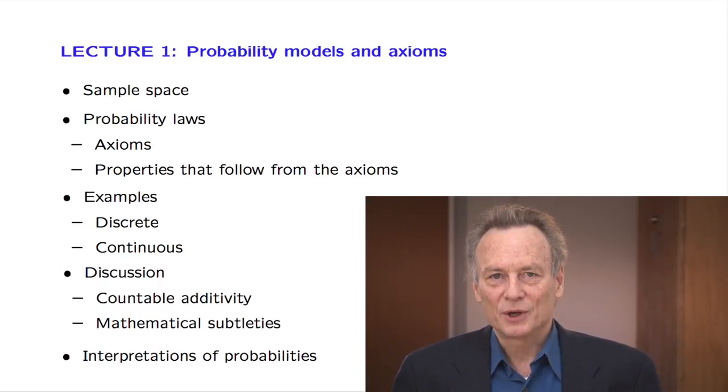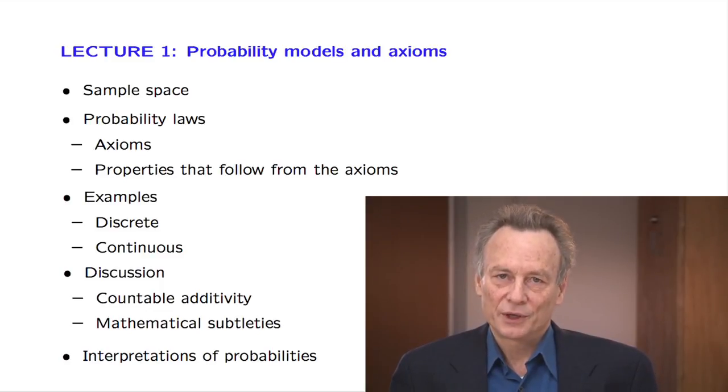A probabilistic model is a quantitative description of a situation, a phenomenon, or an experiment whose outcome is uncertain. Putting together such a model involves two key steps. First, we need to describe the possible outcomes of the experiment. This is done by specifying a so-called sample space. And then we specify a probability law which assigns probabilities to outcomes or to collections of outcomes.